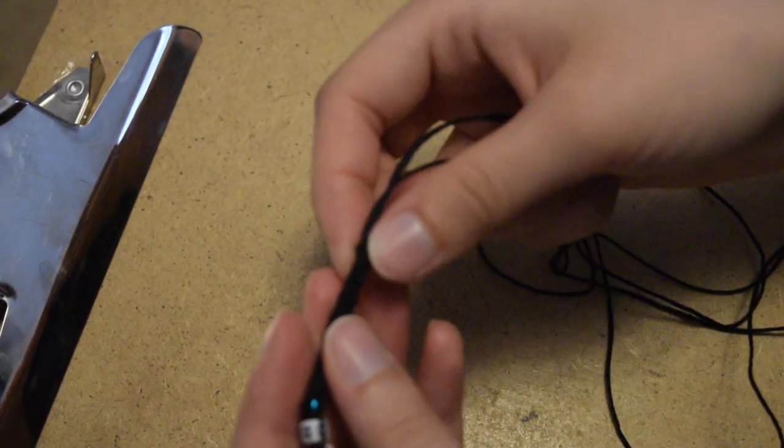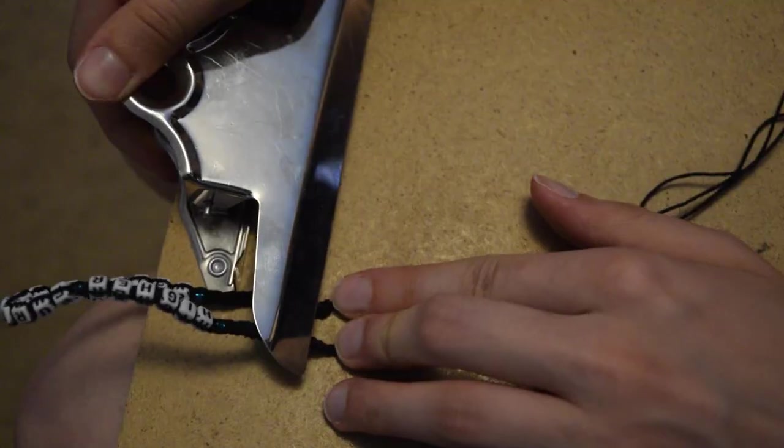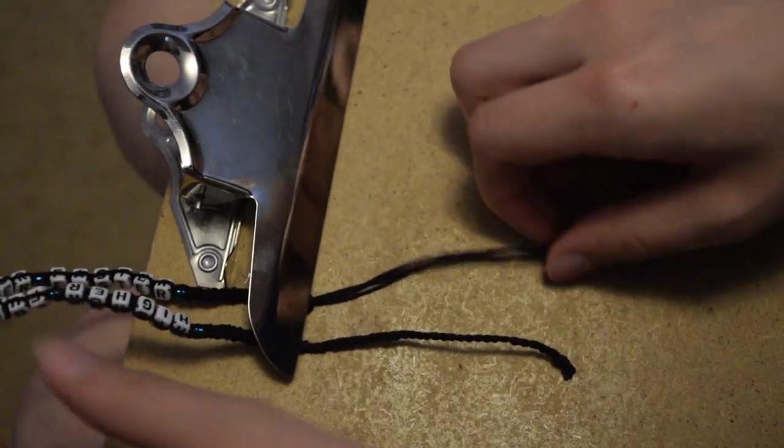When this is complete, we can tie another overhead knot and then braid 3 inches to complete the other side of the anklet ties.